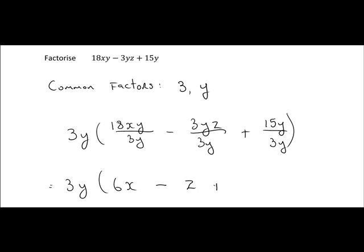15 divided by 3 goes 5 times, and y divided by y goes once, so 5 by 1 is just 5.